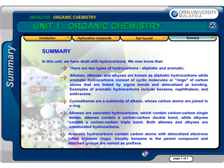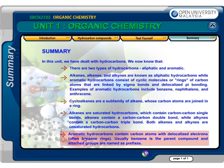5. Aromatic hydrocarbons contain carbon atoms with delocalized electrons, often in benzene rings. Usually, benzene is the parent compound, and attached groups are named as prefixes.